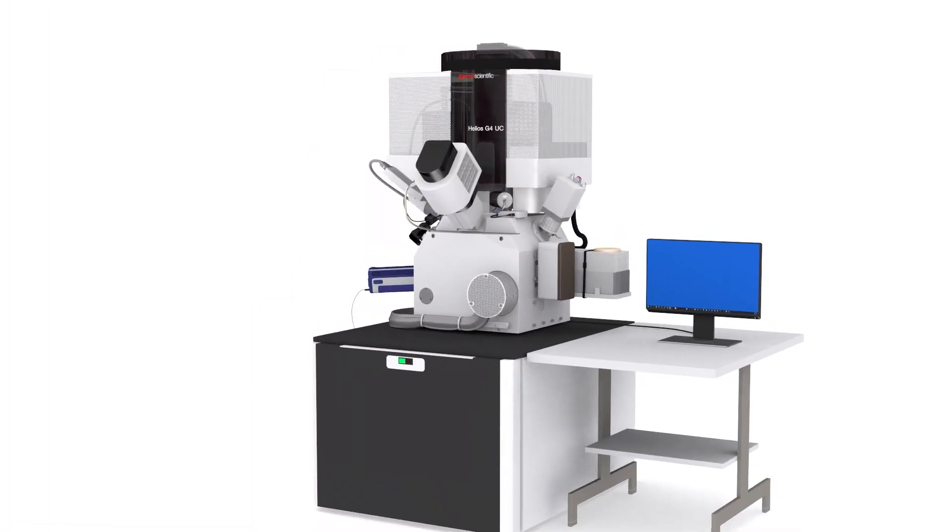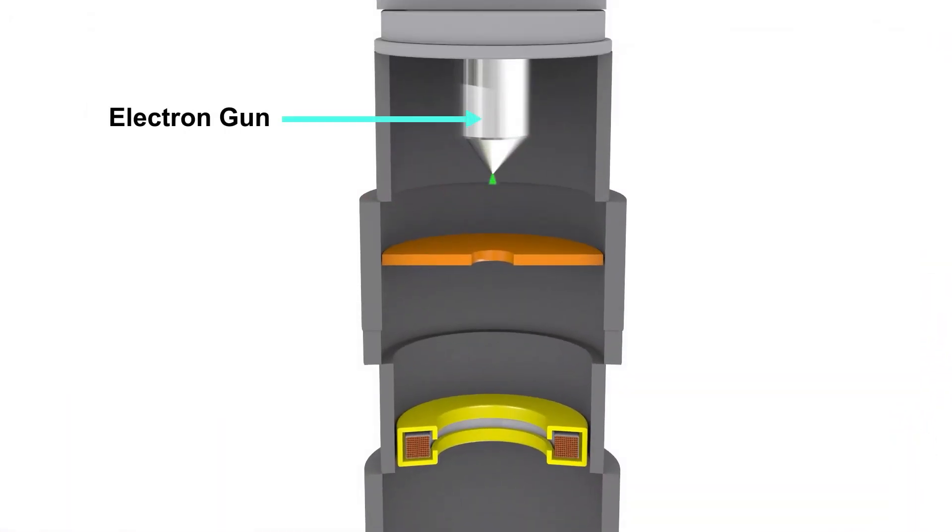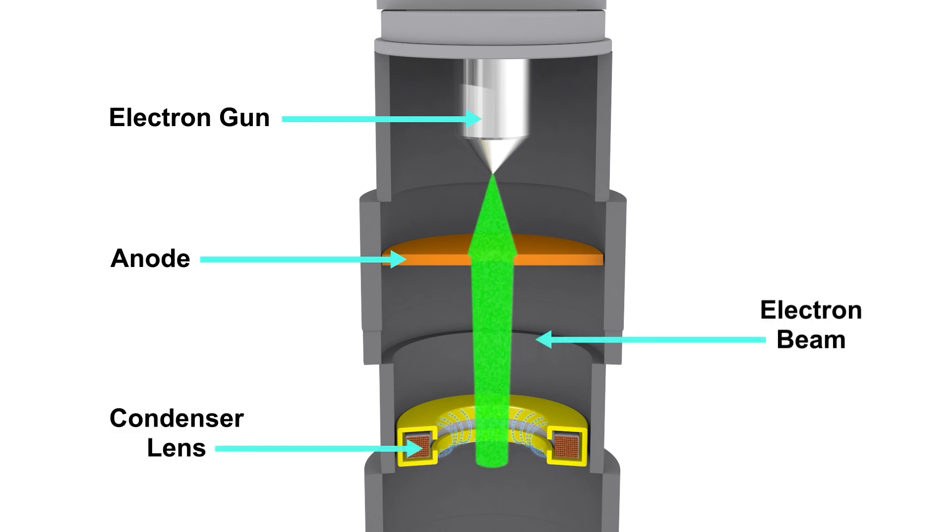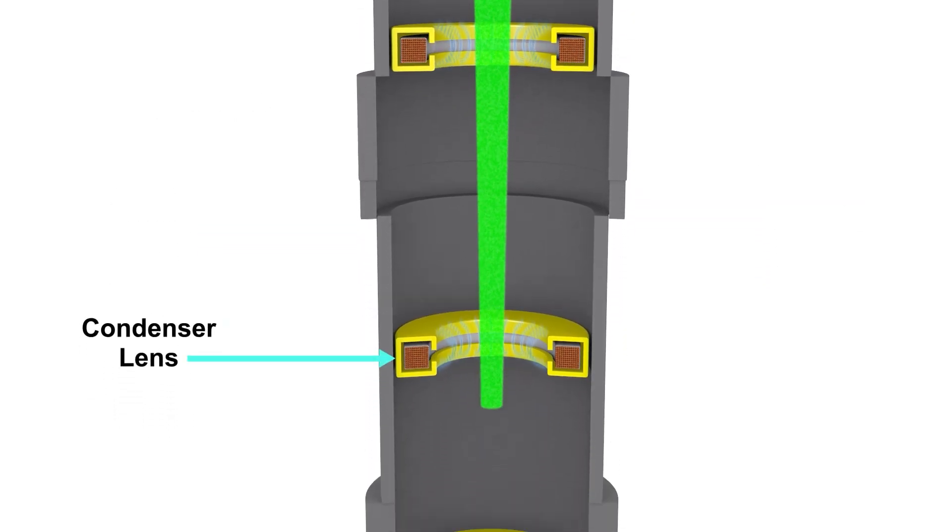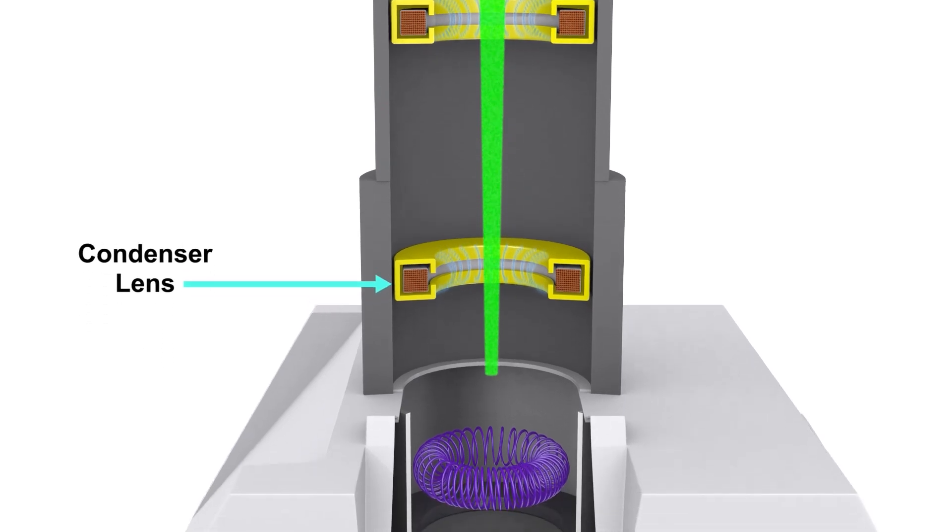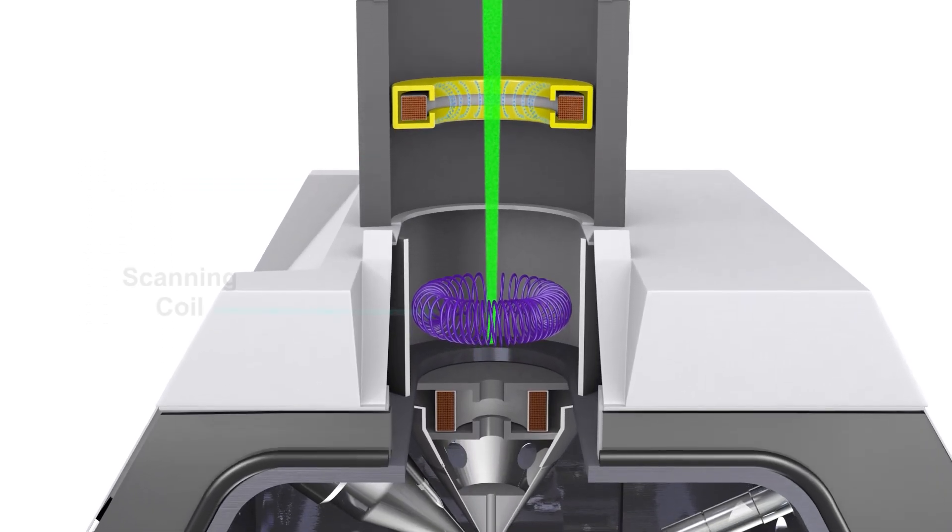Let's take a closer look at how it works. The electron gun is at the top of the microscope and fires a beam of electrons at the sample down below. That beam travels vertically through several electromagnetic condenser lenses which focus the beam onto the sample surface.